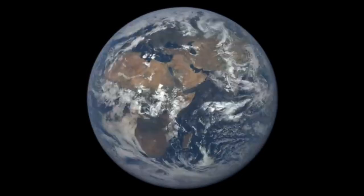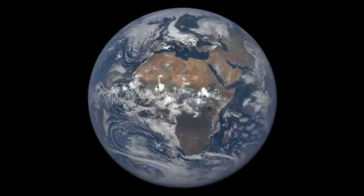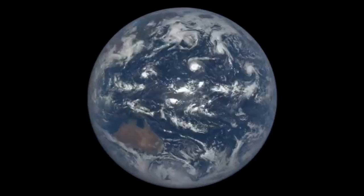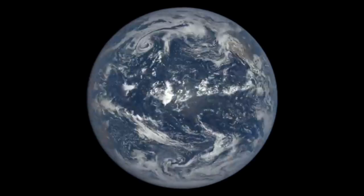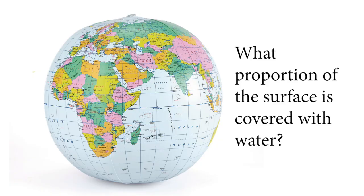Imagine you didn't know that, and what you had was a globe you could throw in the air. When you caught it, you could see where your finger landed and mark down whether that spot was water or land. We could do this repeatedly, spinning the globe many times, and eventually build up a sample. How would we use that sample — a set of points categorized as water or land — to estimate the proportion of the globe covered in water? It seems like a silly example, but it has the same inferential and sampling structure as many very important scientific problems.